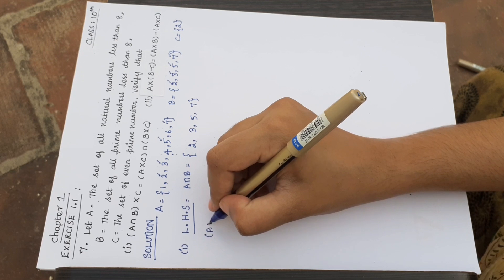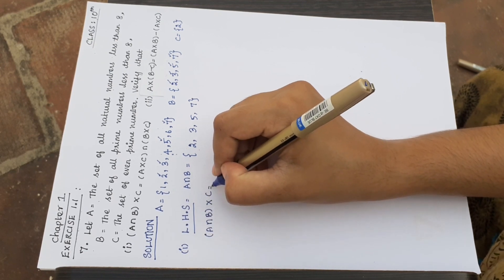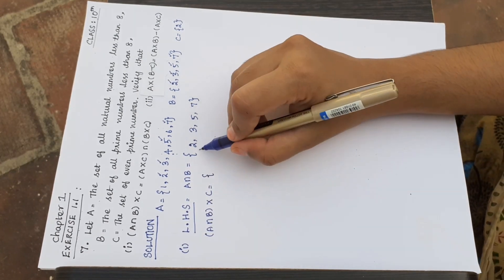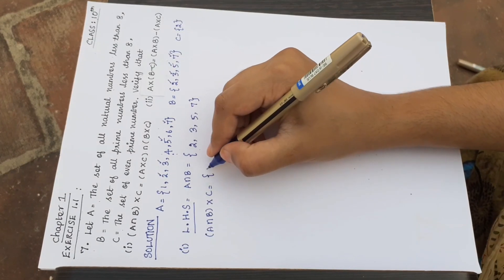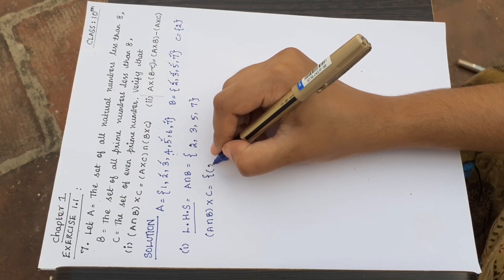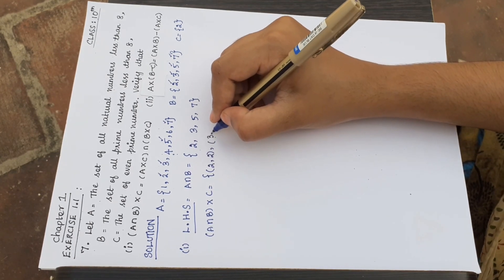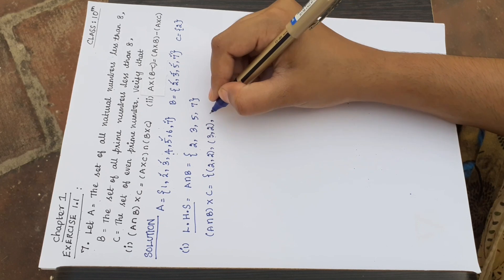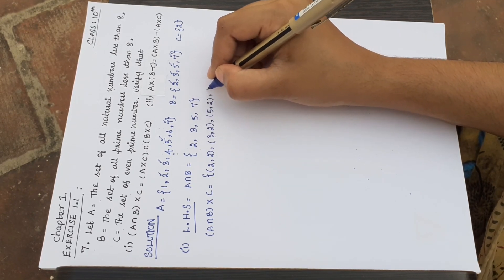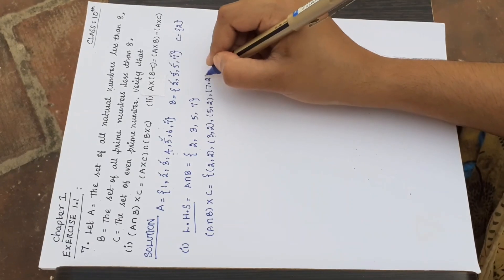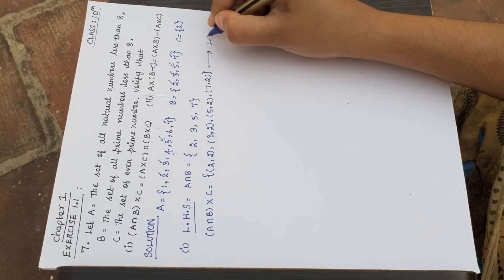Now we take (A∩B) × C. Since C = {2}, we pair each element of A∩B with 2. So we get: (2,2), (3,2), (5,2), (7,2). That is the left-hand side set.